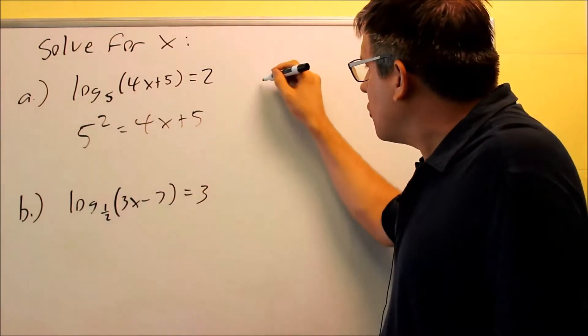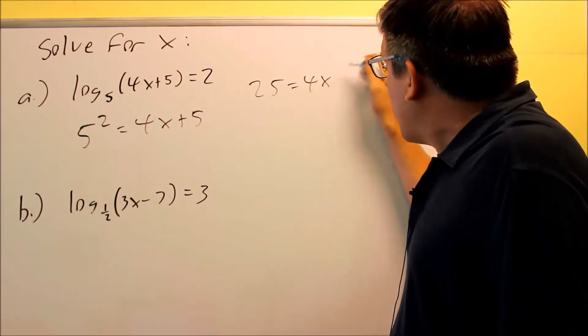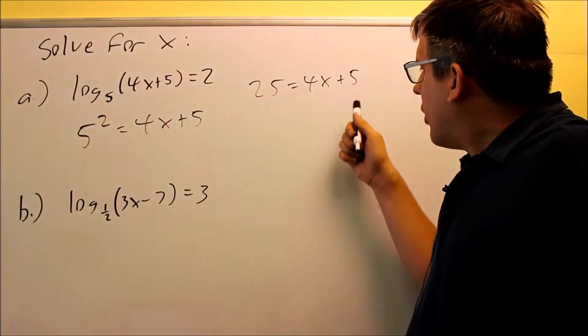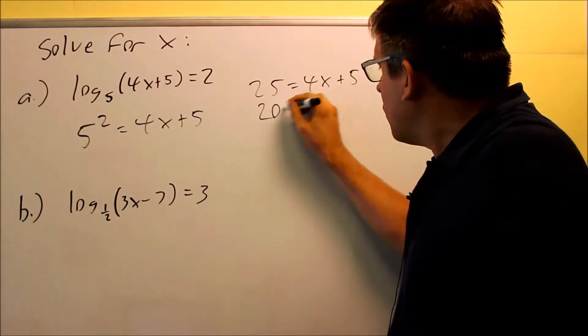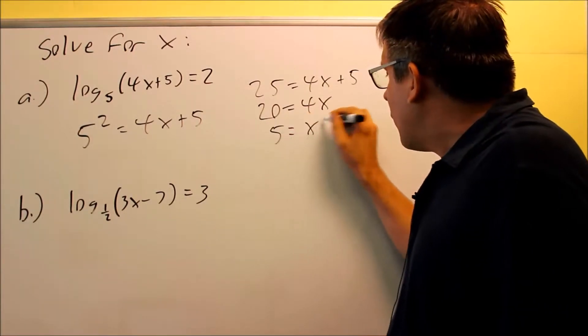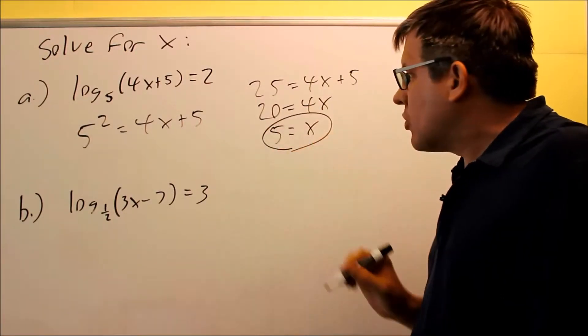5 squared is 25, and then we get 4x plus 5. And then we're going to solve this one for x. We subtract 5 from both sides, you get 20 is equal to 4x, divide both sides by 4, and we get 5 as our answer. So 5 would answer the first one.